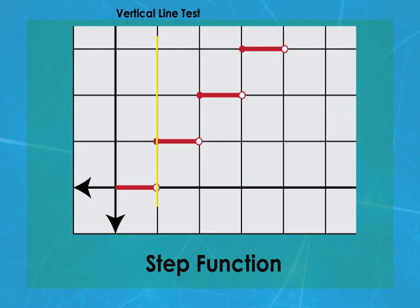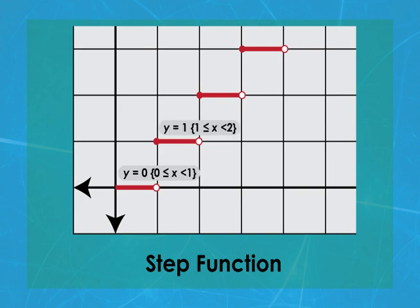This first stair step in the function is part of the graph of y equals zero. If you limit the domain as shown, then you get the step. The same goes for the next step. It's a graph of y equals one with restrictions on the domain. And so on for the other steps.